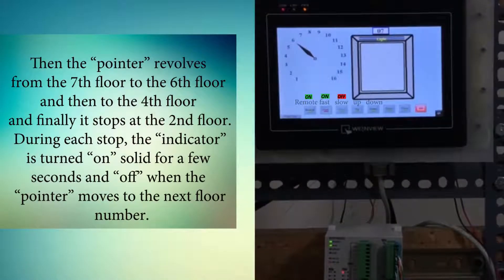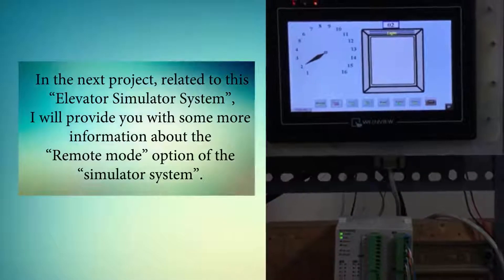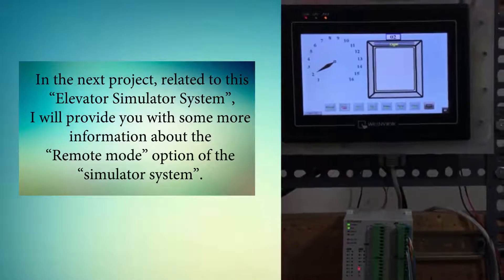Then the pointer revolves from the seventh floor to the sixth floor, then to the fourth floor, and finally it stops at the second floor. During each stop, the indicator is turned on solid for a few seconds and off when the pointer moves to the next floor number.